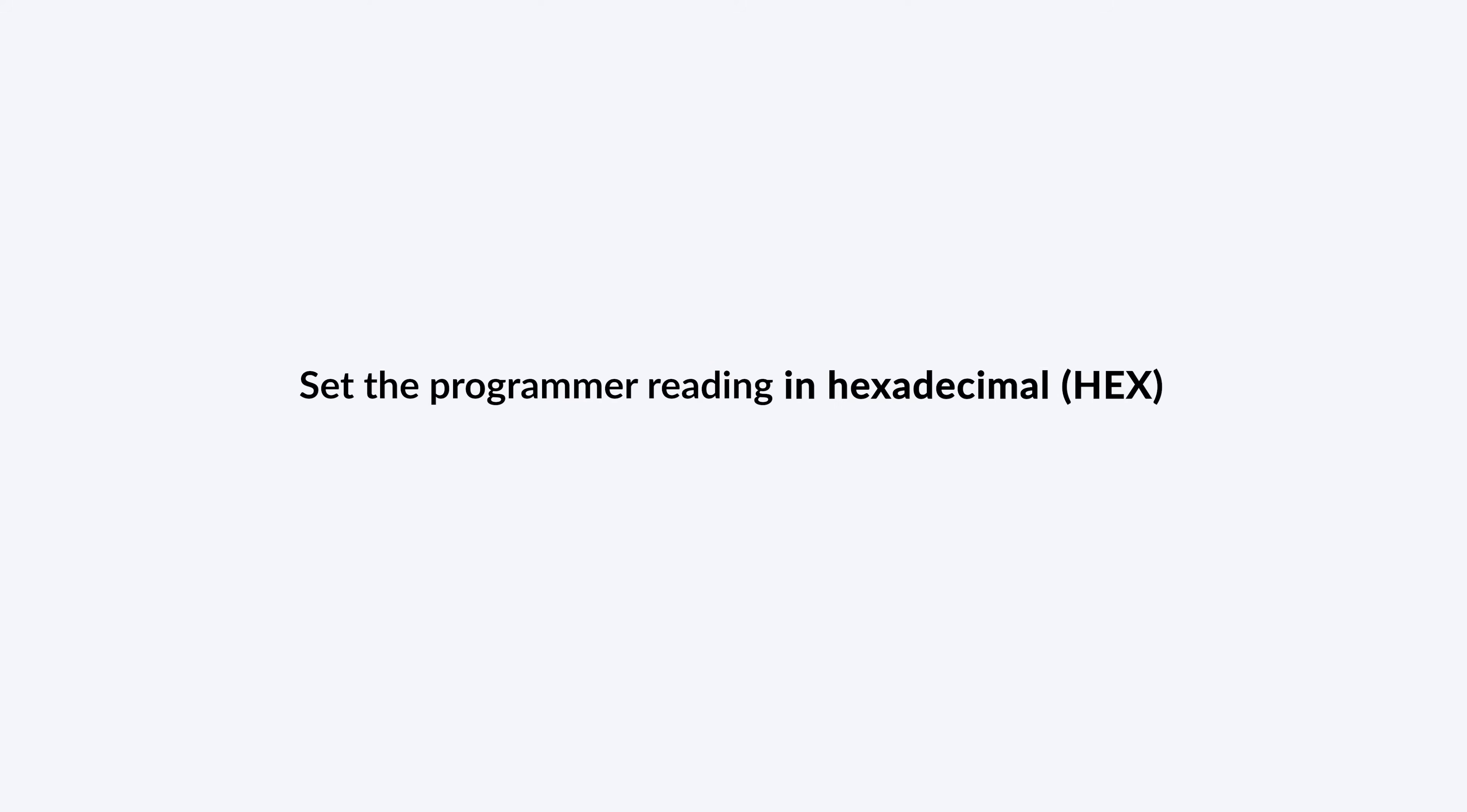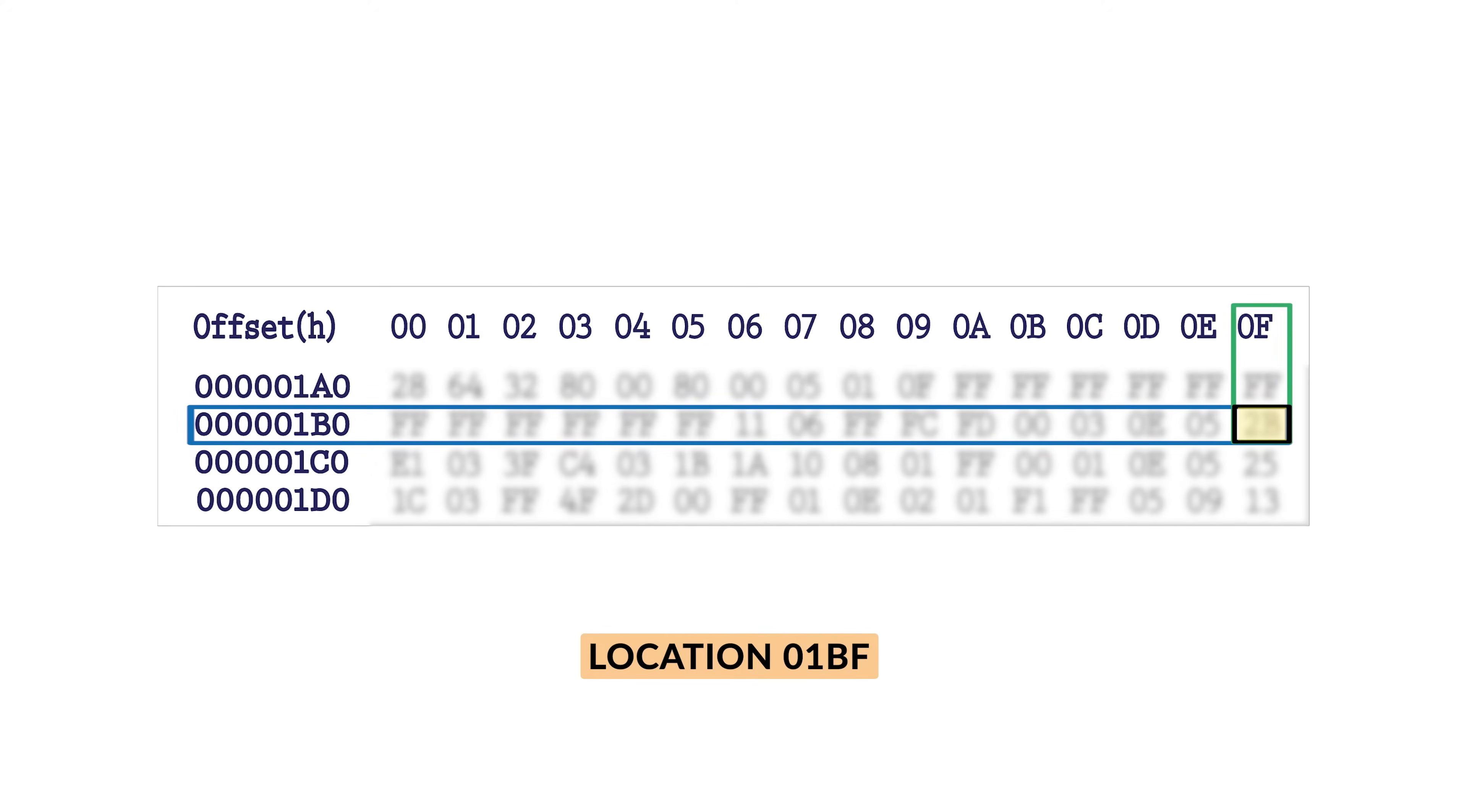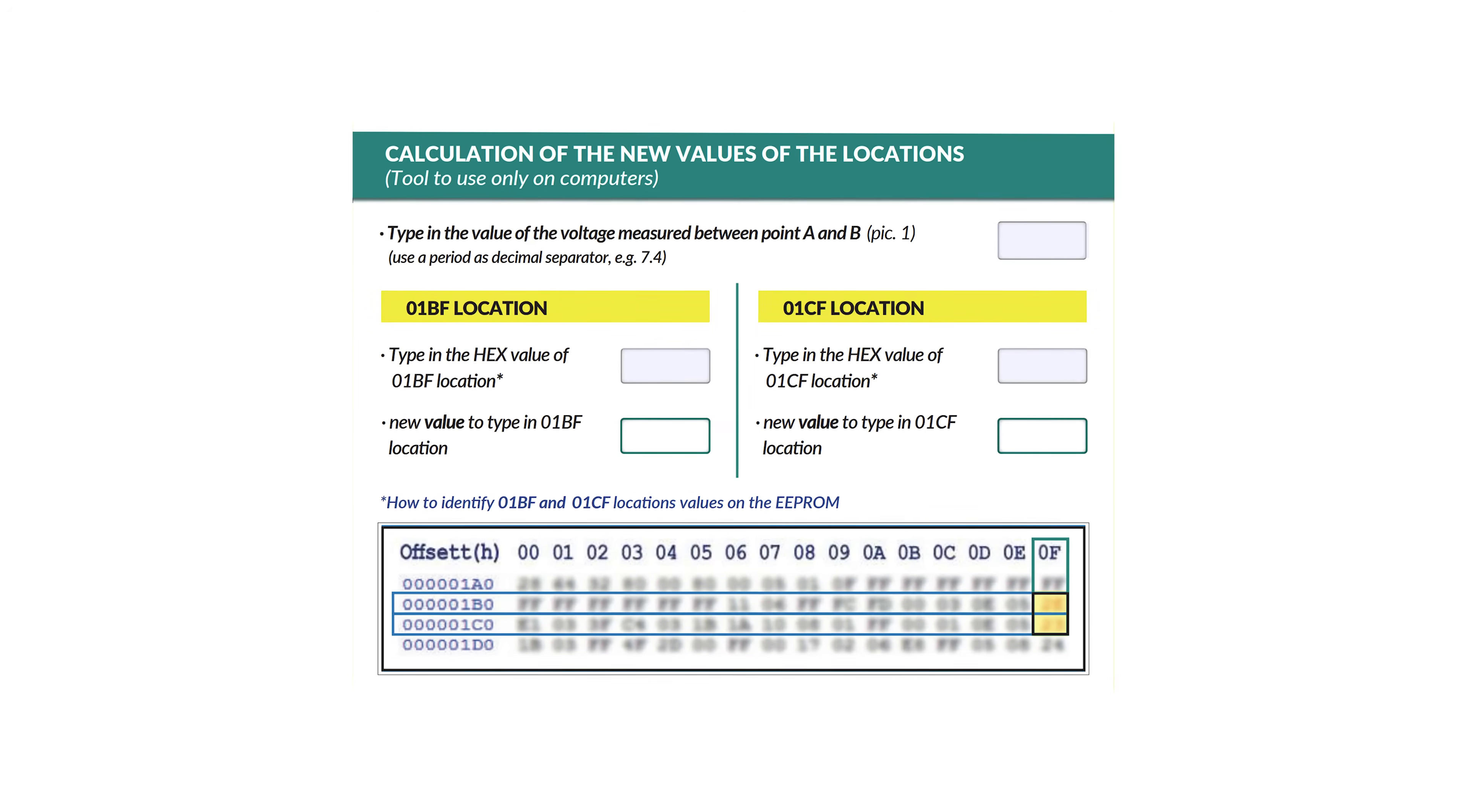Set the reading in hexadecimal and make a backup. Identify on the EEPROM the locations 01BF and 01CF. Scanning the QR code or following the link on the product label, open the PDF with the instructions.